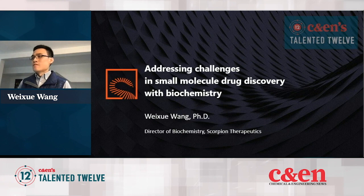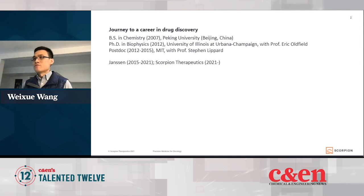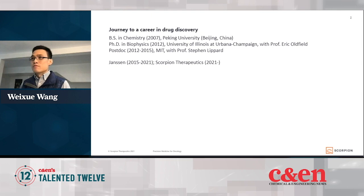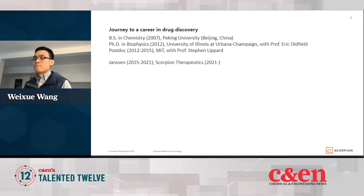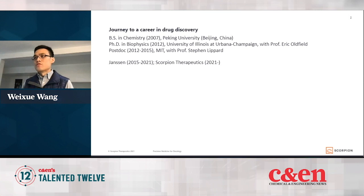So first a little bit about myself. I've been interested in chemistry, especially chemistry of living systems, since high school. I started my journey in chemistry as an undergraduate student at Peking University in China, where I did research in the molecular design lab working on protein misfoldings. After that I moved to the U.S. for doing research in mechanistic chemistry, first at University of Illinois at Urbana-Champaign with Professor Eric O'Field for my PhD.